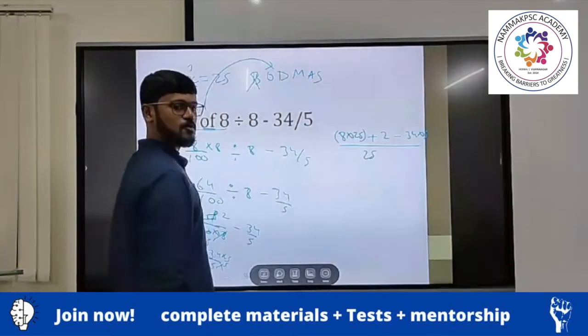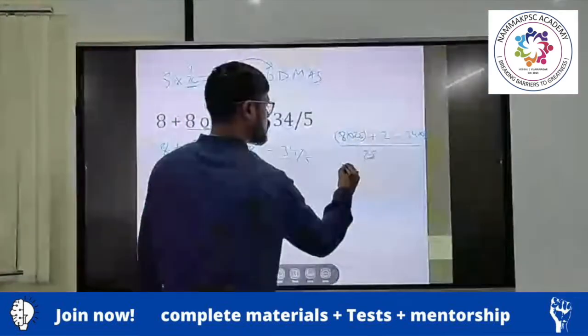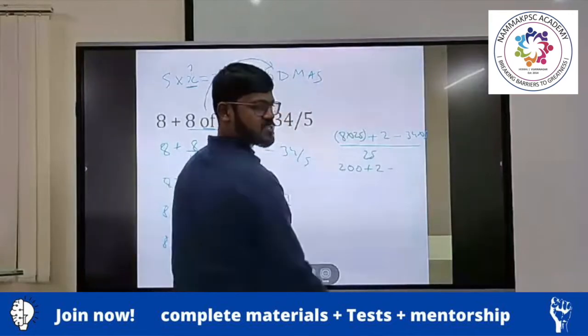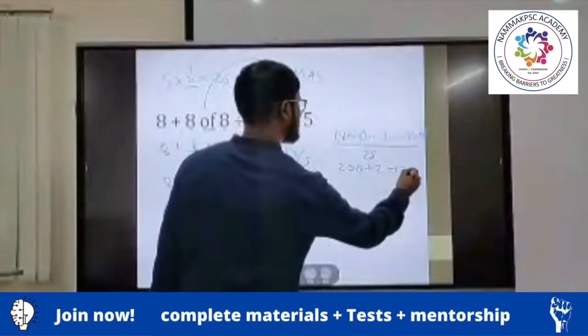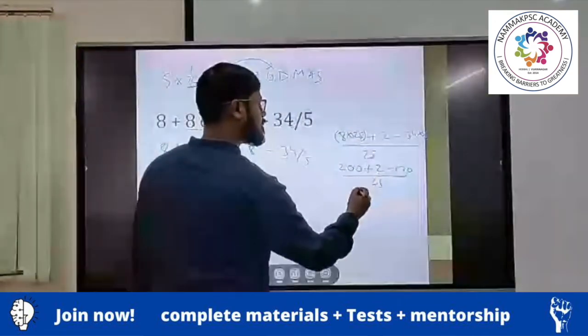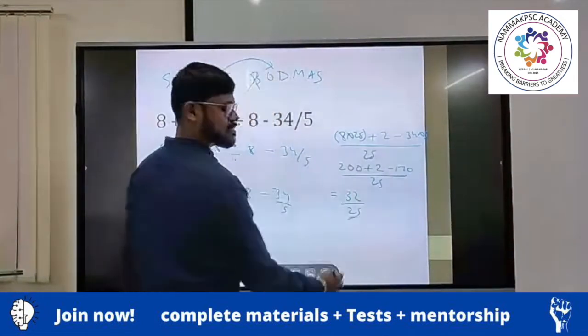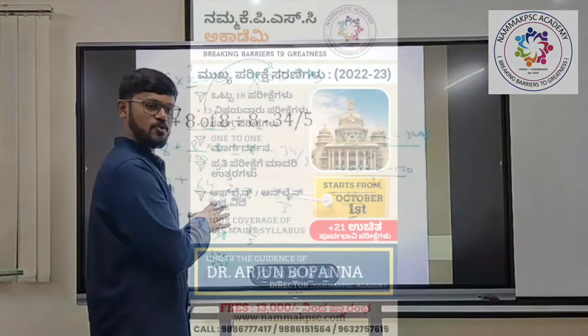You just need to see, I will calculate this. 8 into 25 is what? 200 plus 2. 34 into 5 is what? 170 divided by 25. Solve this particular thing. Somewhere you will get around 32 by 25. This is your answer. Keep it in fraction until unless the answer is asked in the question. Did you understand how to do?